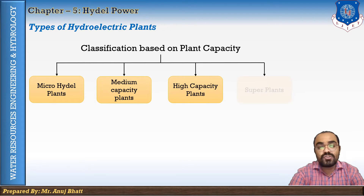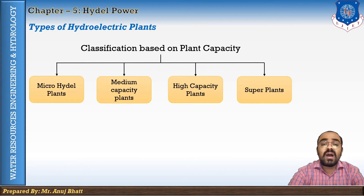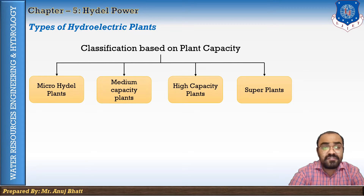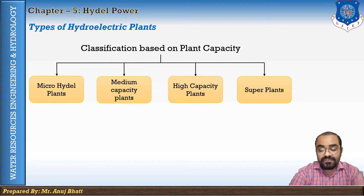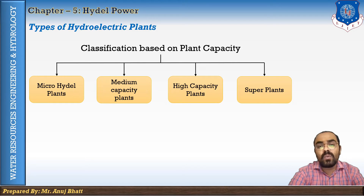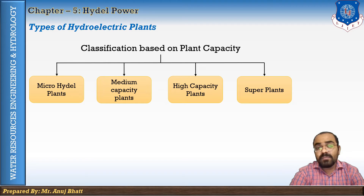Based on plant capacity, there are micro hydel plants, medium capacity plants, high capacity plants, and super hydro plants. Micro hydel plants have a capacity of less than 5 megawatt. Medium capacity plants have a capacity between 5 megawatt to 100 megawatt, and most hydropower plants in India are of medium capacity. Plants with capacity between 101 to 1,000 megawatt are high capacity plants, and above 1,000 megawatt is considered a super hydro plant.